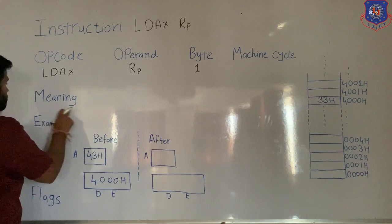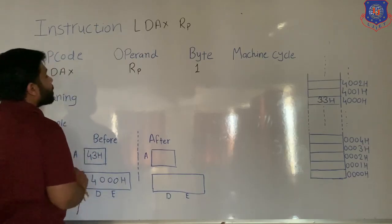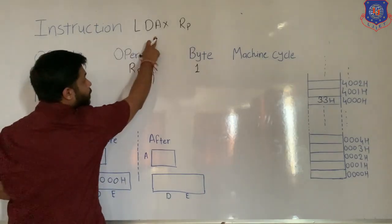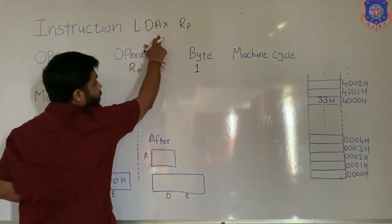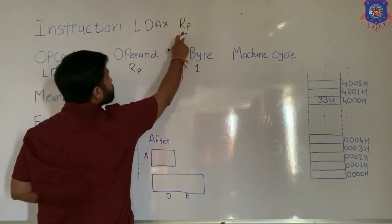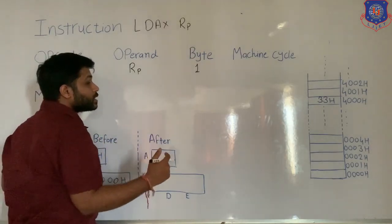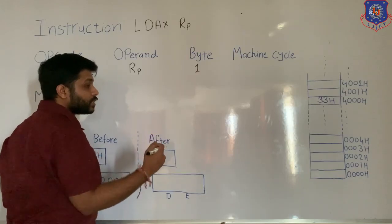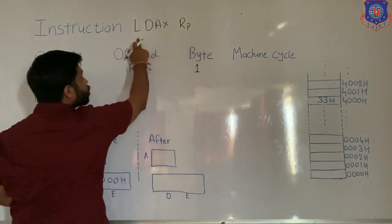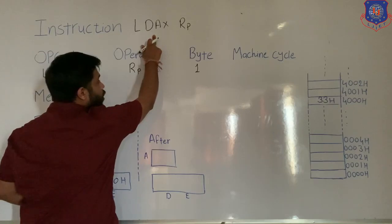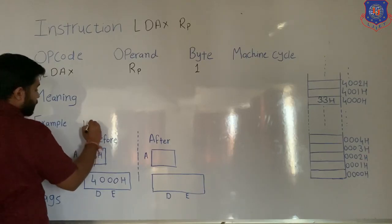Now let's see the meaning of the instruction. LDAX register pattern means: load data to accumulator — but from where? Load data to accumulator from the memory location which is specified in the register pattern. So in the register pattern, you first give some memory location, specify the register, and when you give LDAX register pattern, it means load data to accumulator from that memory location.